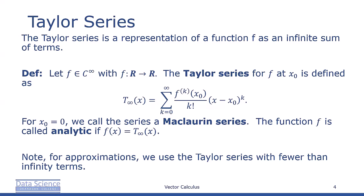When x_0 equals 0, we call this series a Maclaurin series. The function f is called analytic if f(x) is equal to its Taylor series.